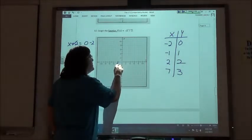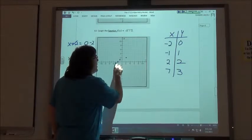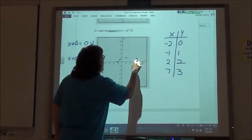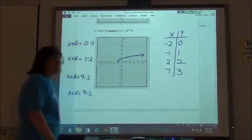So negative 2 is up 0, negative 1 is up 1, 2 is up 2, and 7 is up 3. And our square root function looks something sort of like that.